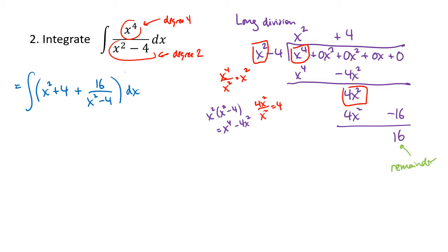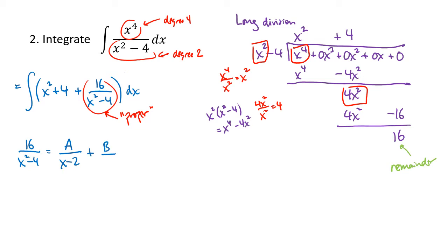This tells us the fraction can be rewritten as the quotient x squared plus 4 plus the remainder (16) divided by the divisor. Now we have a proper fraction: the degree of just the number 16 is 0, and the degree of the bottom is 2. So now we get to do partial fractions — we had to do the long division before we could even begin the decomposition.